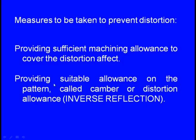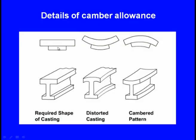To overcome distortion, we design the pattern such that the cavity initially has a different shape than the required casting. After solidification, because of distortion, the shape comes to the required form. Measures include providing sufficient machining allowance to cover the distortion effect, or providing a suitable allowance on the pattern called the camber or distortion allowance — also known as inverse reflection. We design the pattern with the opposite bend, so that after solidification and distortion, the casting achieves the correct shape.